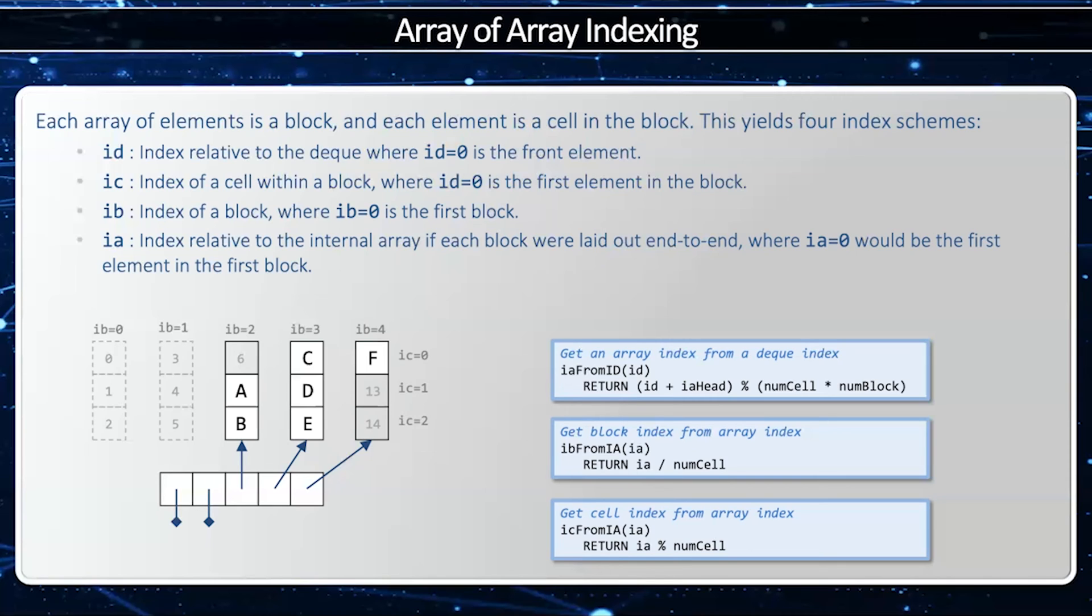We can see from the pseudocode the way to translate a deque index into an array index, a block index, and a cell index. So I take the deque index and I add it on to IA head, and that's where the first element in the deque resides in the array index, and then modulo the number of cells times the number of blocks. That gives me my array index.